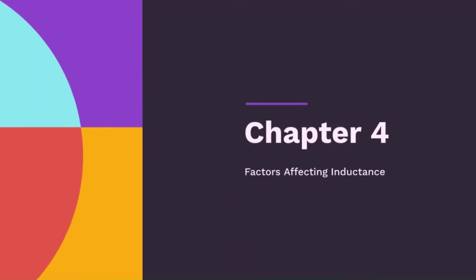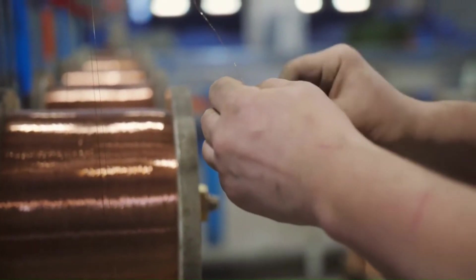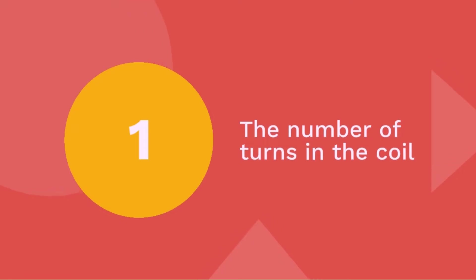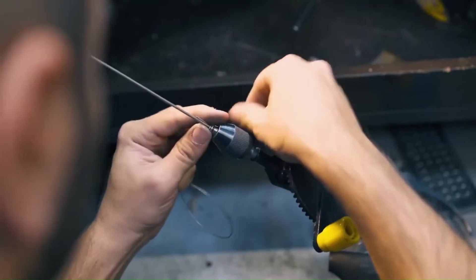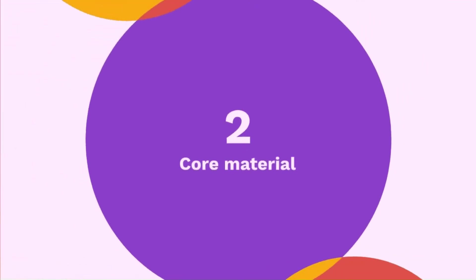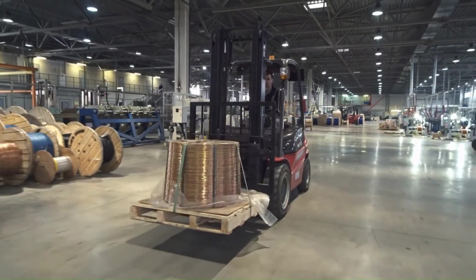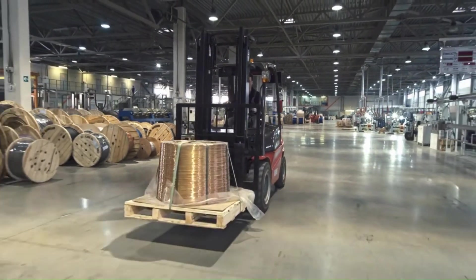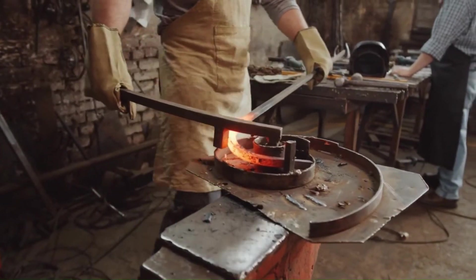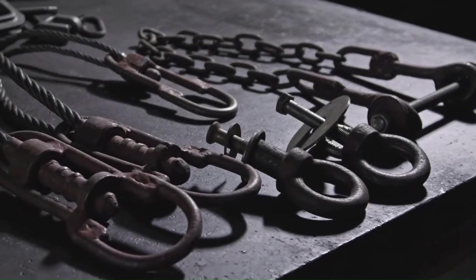Chapter 4: Factors Affecting Inductance. The inductance of a coil depends on several factors. Number 1: Number of turns in the coil. If you have more turns in, then it will increase the inductance. Number 2: Core material. If the coil is just in air, then the inductance will be less. If it has a magnetic material like iron, that can increase the inductance very significantly.